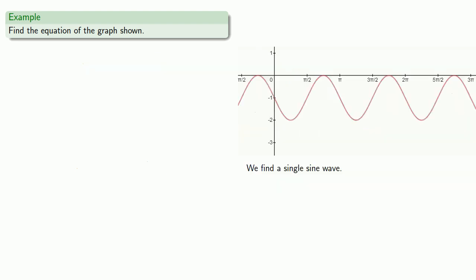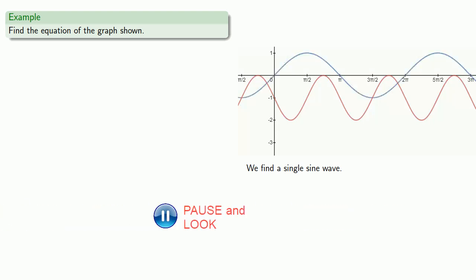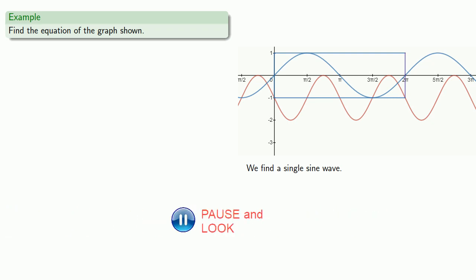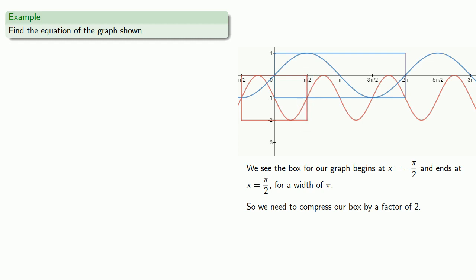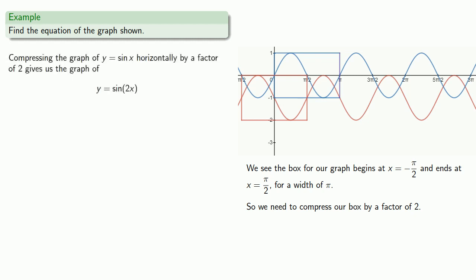Now let's look at another example. We'll find a single sine wave and a single sine wave of our graph. The box for our graph begins at x equals negative pi halves and ends at x equals pi halves, for a width of pi, so we need to compress our box by a factor of 2. Compressing y equals sine of x horizontally by a factor of 2 gives us y equals sine of 2x.